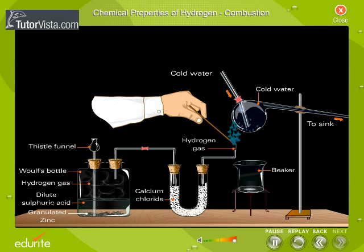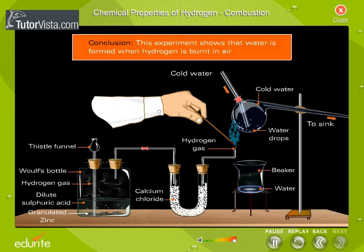You will find that some water droplets collect on the outer surface of the flask. This experiment shows that water is formed when hydrogen is burnt in air.